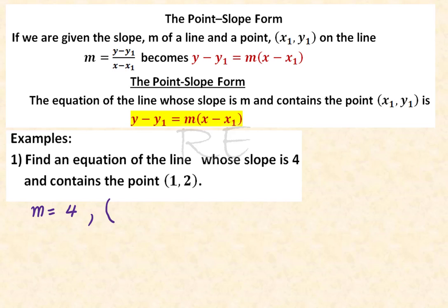M is equal to 4 and it contains, the line contains the point (1, 2). So 1 is going to be our x₁ and 2 is going to be our y₁. We will use the point-slope formula, y minus y₁ is equal to m times x minus x₁, to get an equation of the line.